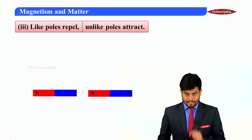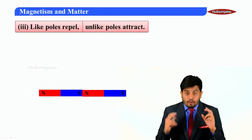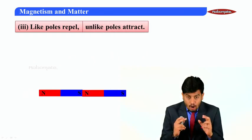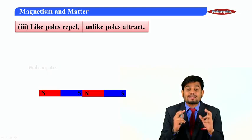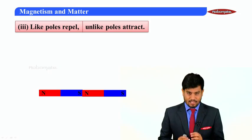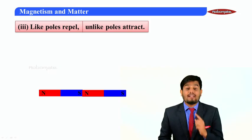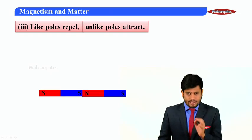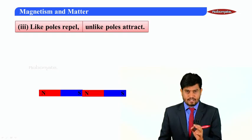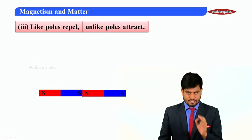In the same way, unlike poles attract each other. If you bring two bar magnets of opposite poles, those two bar magnets always attract each other because of the attractive force that exists between the opposite poles. So on the whole, like poles repel each other, unlike poles attract each other.